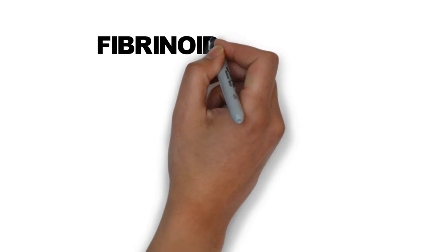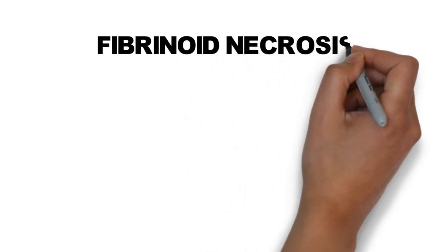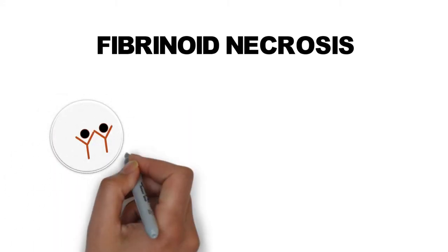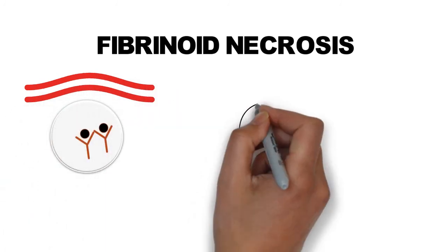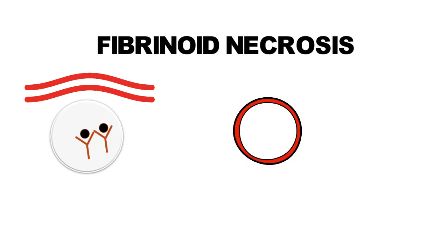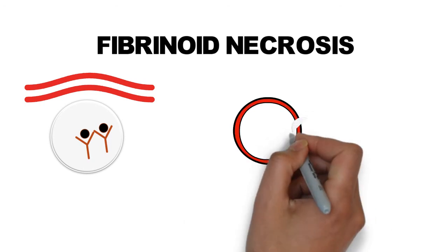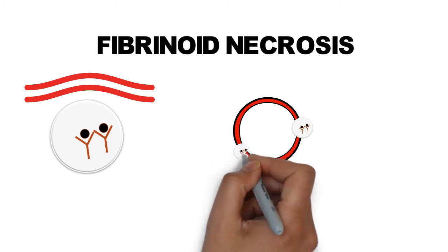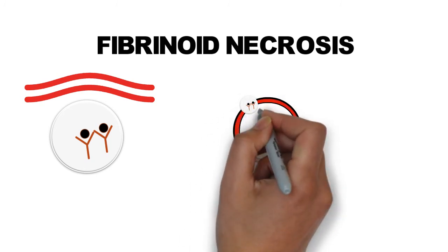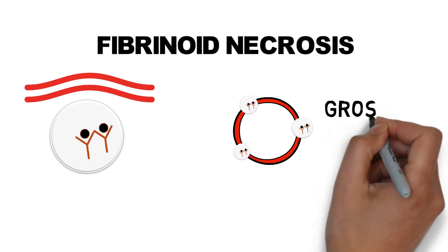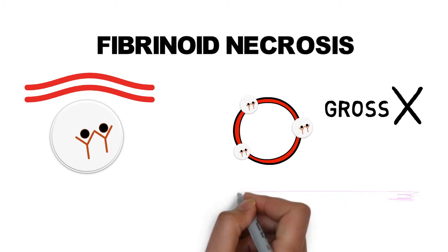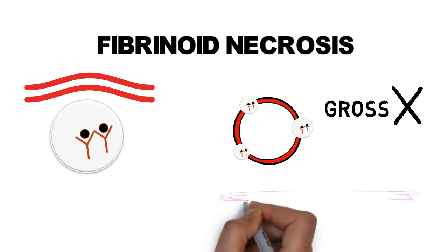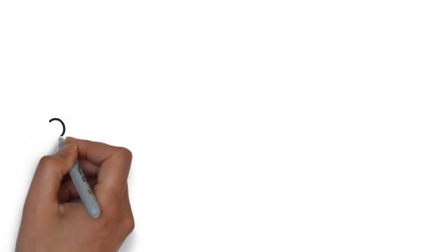The sixth pattern is fibrinoid necrosis. It is generally seen in immune reactions in blood vessels, such as immune-mediated vasculitis. It usually occurs when immune complexes deposit in the wall of arteries. Grossly it cannot be identified. Microscopically, the immune complex and fibrin leak from the vessels and form a bright pink amorphous appearance on H&E stain. This is called fibrinoid appearance.